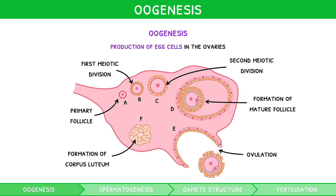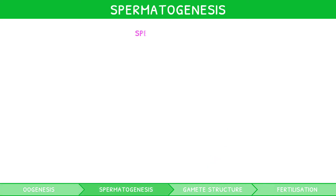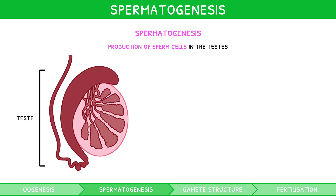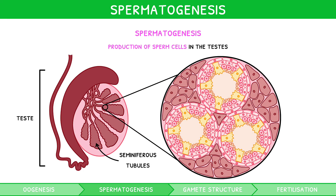You now understand the formation of female gametes. Let's now cover males. Spermatogenesis is the production of sperm cells in the testes, and it occurs in the fetus and adult male, i.e. throughout life. Before we can explain the stages of spermatogenesis, it is first important to understand the anatomy of a testis. They are composed of narrow, fluid-filled tubules called seminiferous tubules, with interstitial cells filling the gaps between adjacent tubules, known as Leydig cells.